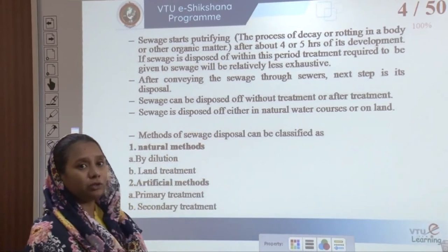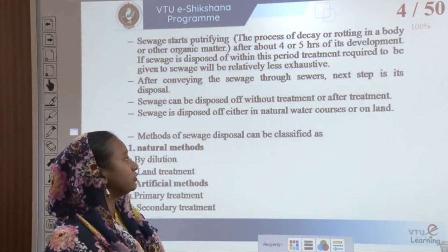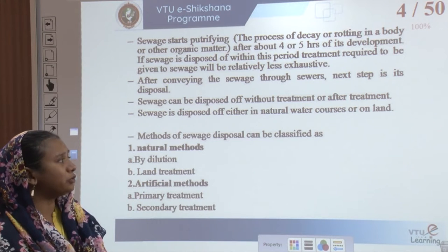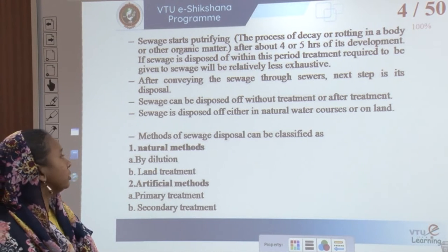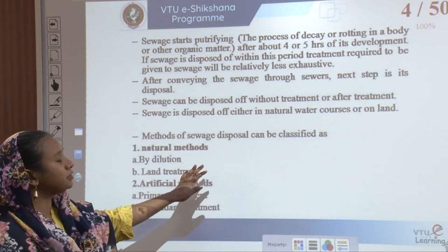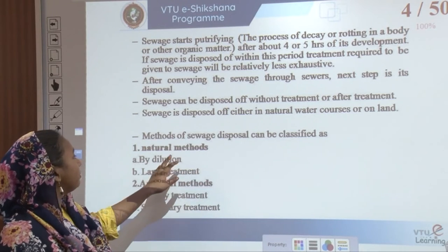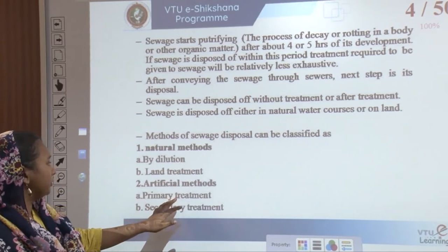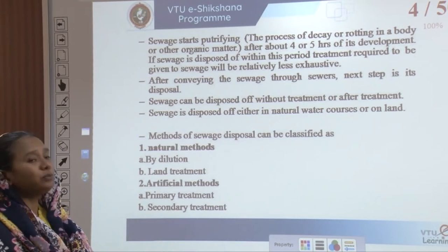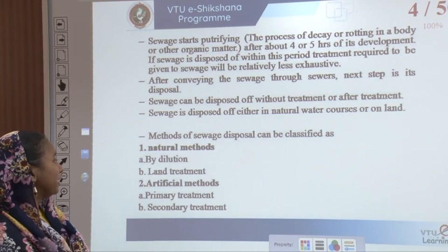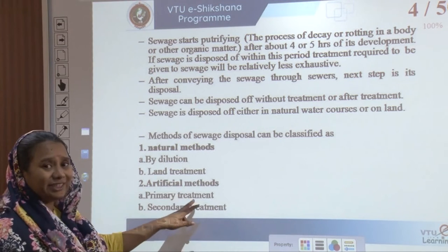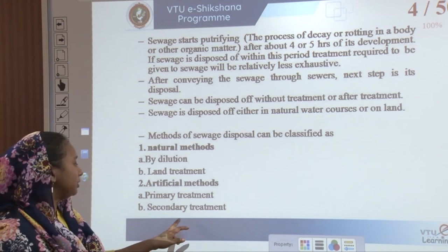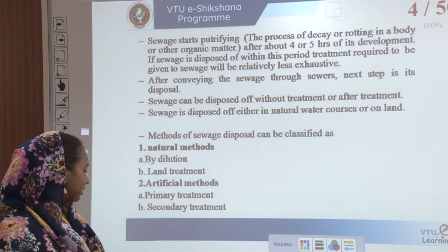Sewage should be disposed of without treatment or after treatment right at the source immediately, and it should be disposed of either in natural water courses or onto the land. There are various methods of sewage disposal — some are natural and some are artificial. For natural methods we use dilution or the land treatment method. For artificial methods we have the primary treatment and the secondary treatment.